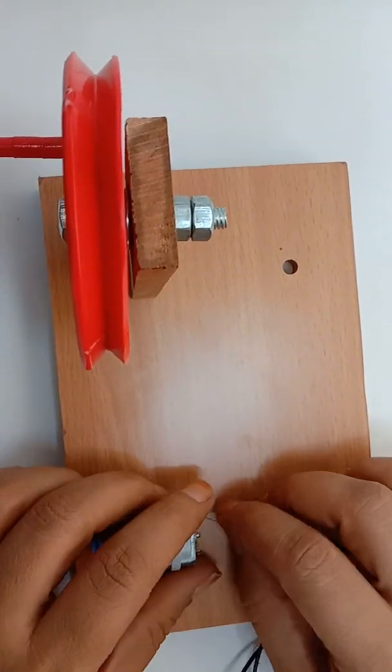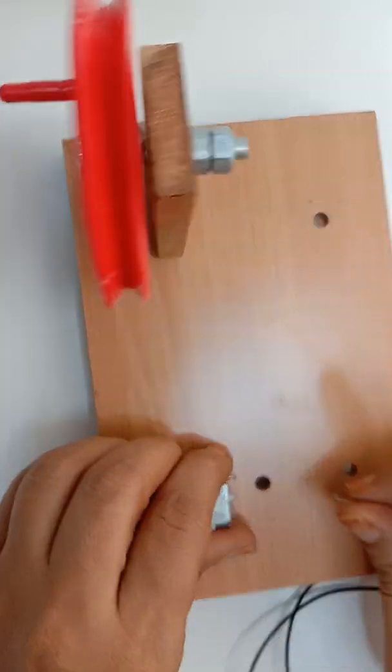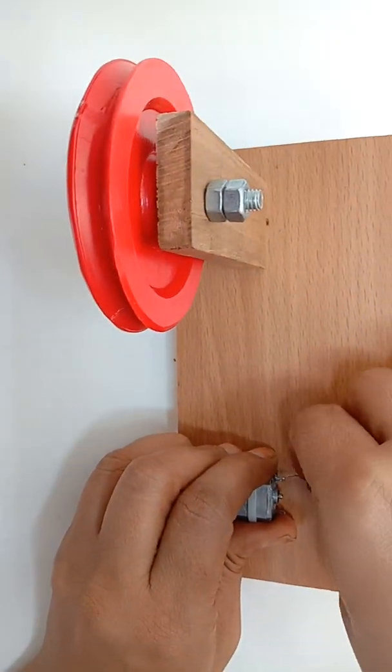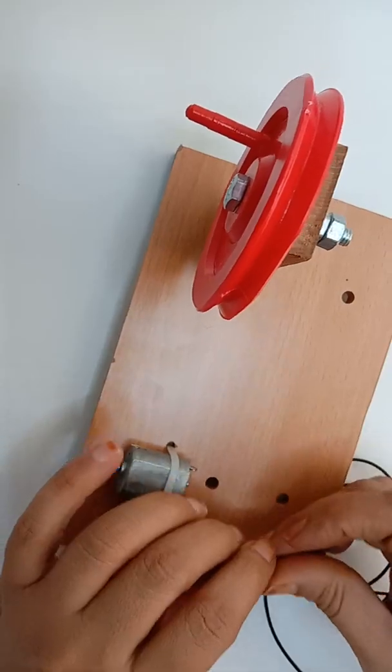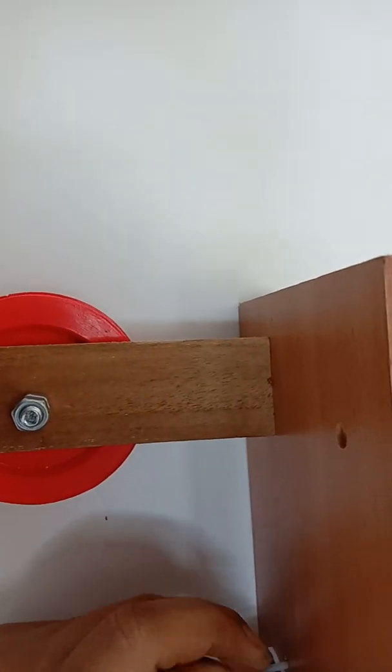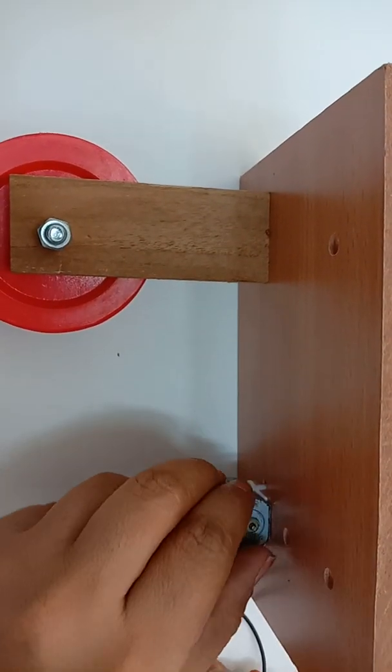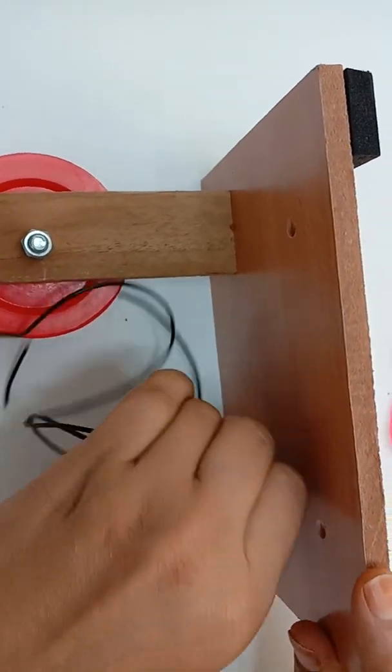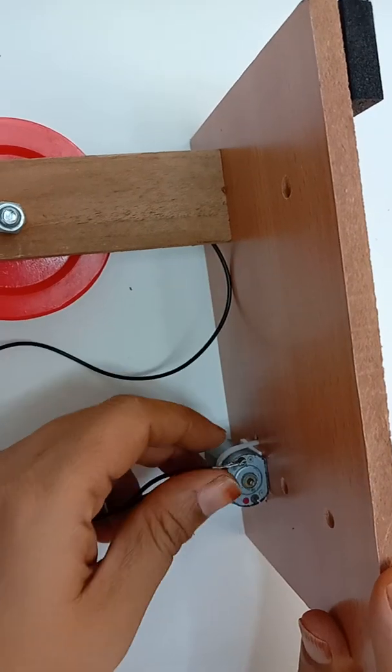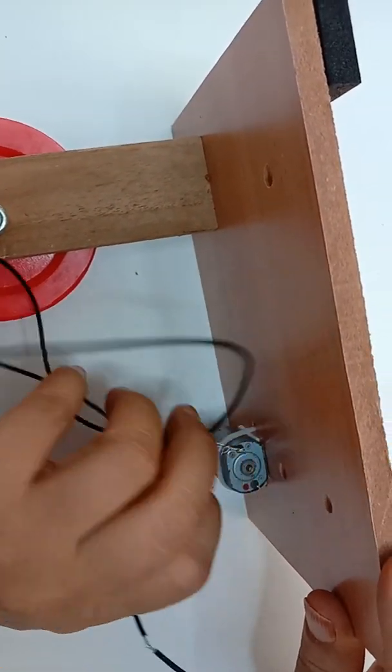Now see, I have inserted these wires through this pin of the dynamo and I am just closing the loop to make the connection firm and tight.